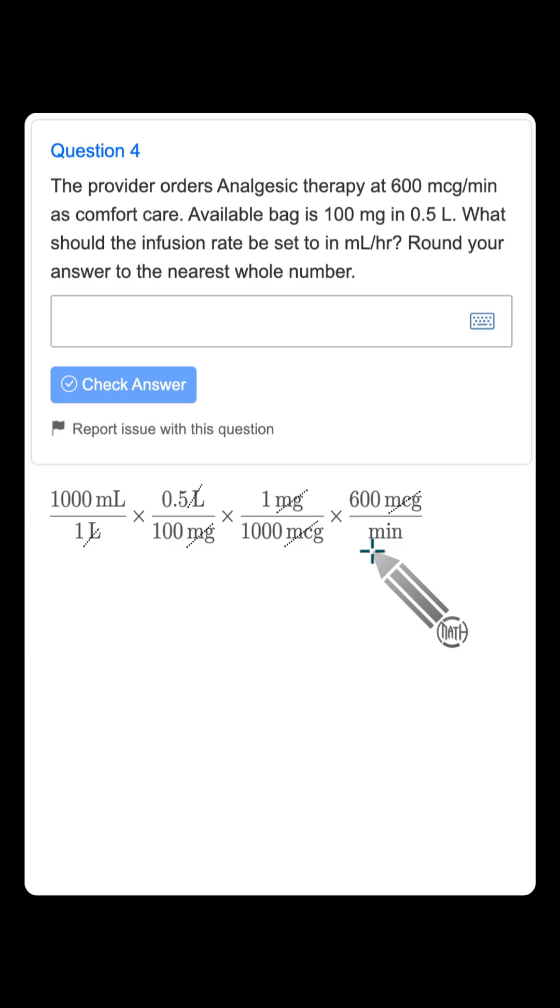If we stopped right now, our answer would be milliliters per minute. But our goal was milliliters per hour. So we need to get rid of these minutes. Notice I'm bringing in yet another conversion. 60 minutes is equal to one hour. This allows us to cancel out our minutes.